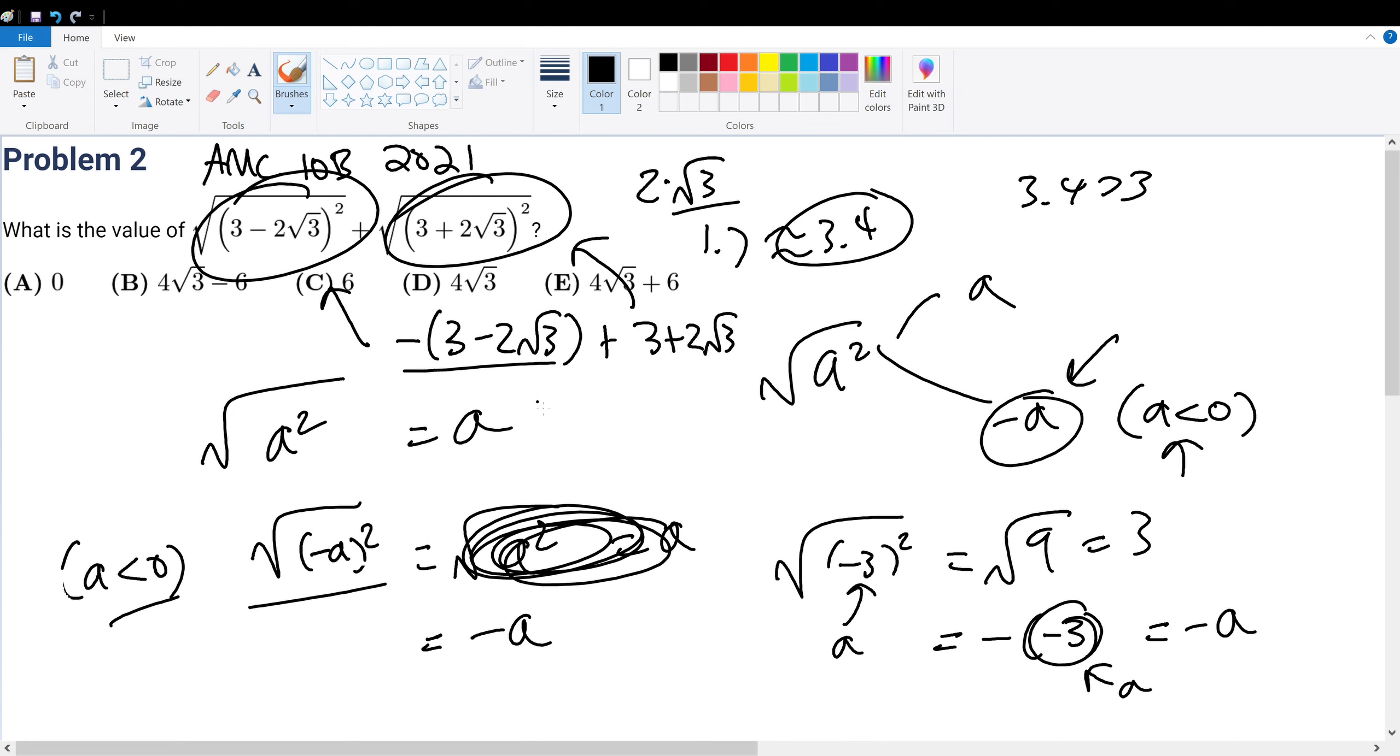This we can evaluate to be negative 3 plus 2 root 3. And since negative 3 and negative 3 cancel, we get 2 root 3 plus 2 root 3, which gives 4 root 3, giving us answer choice D.